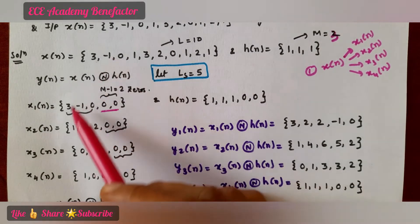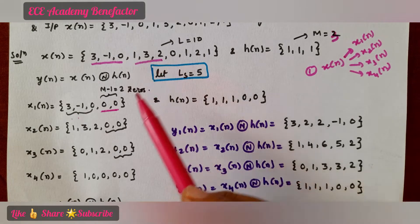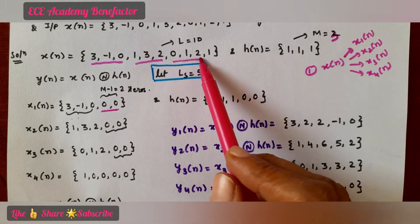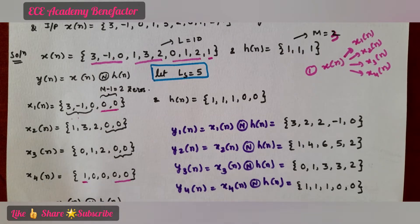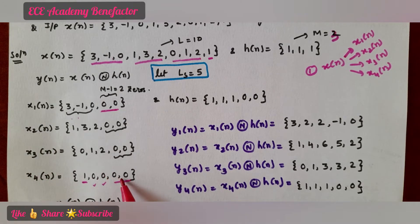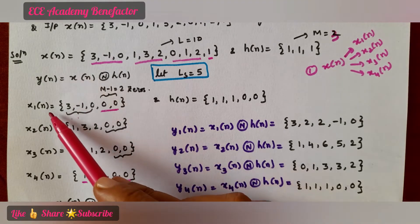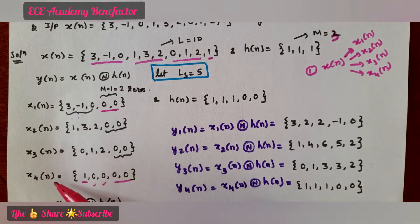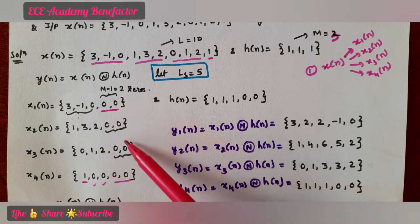So x1(n) = {3, -1, 0, 0, 0}. Next take {1, 3, 2} to form x2(n). Then take {0, 1, 2} for x3(n). You are left with only {1}, so add 2 more zeros to make x4(n) of length 5. We have made 4 sections of x(n), each of length 5, with M-1 zeros appended at the end.